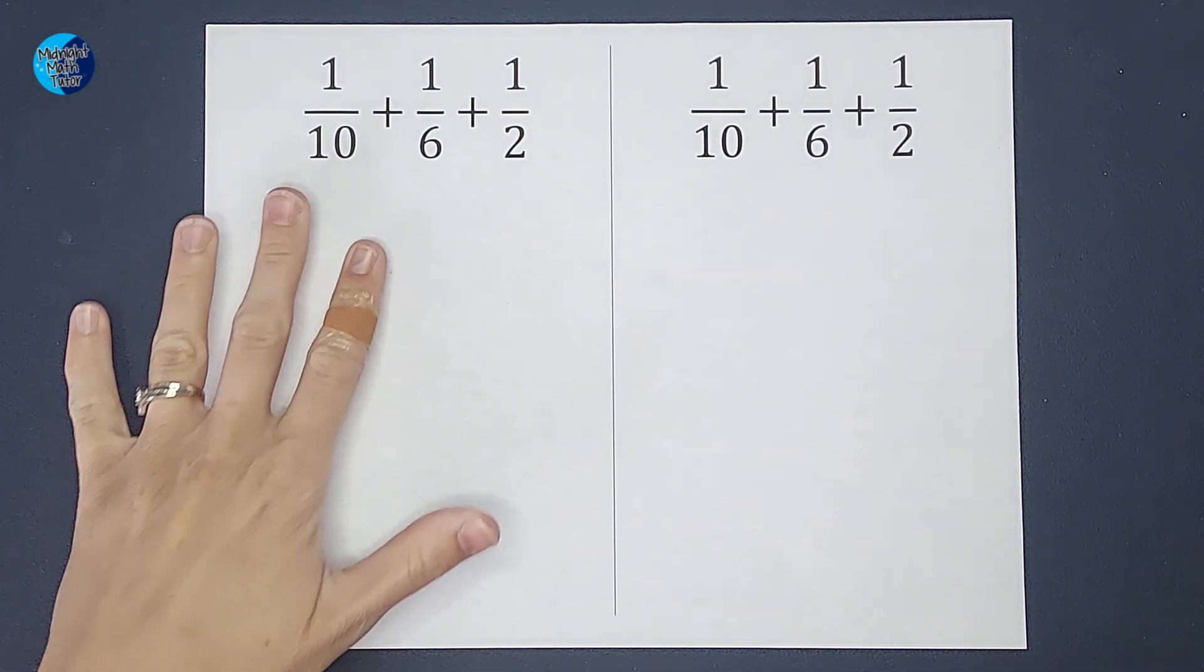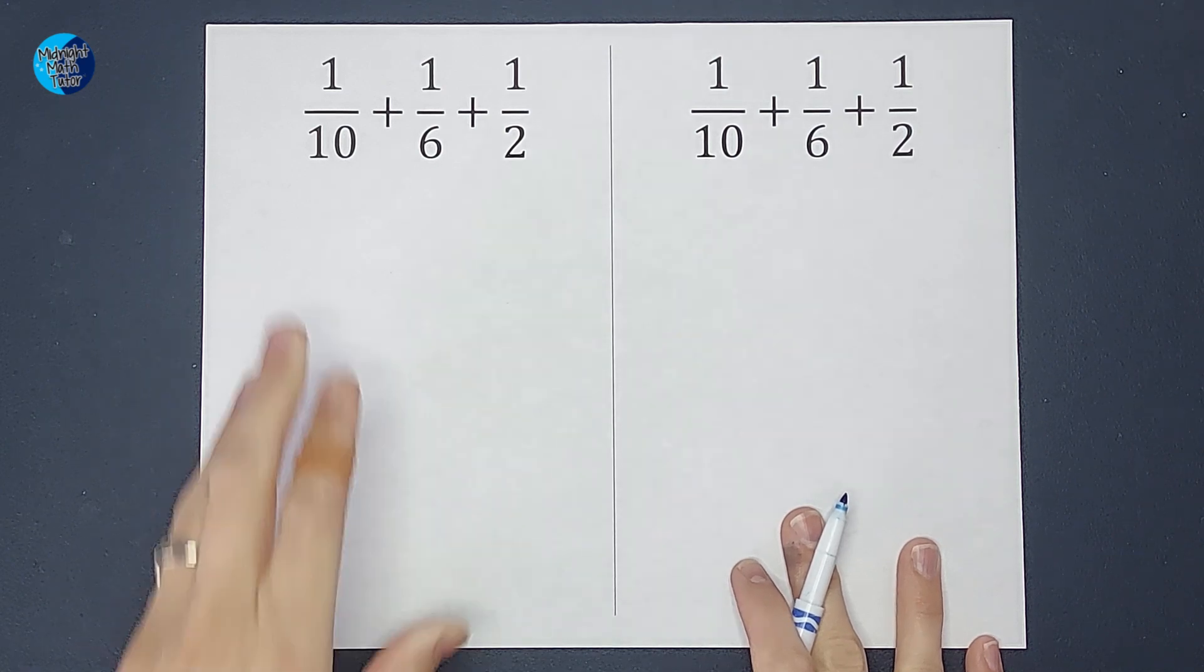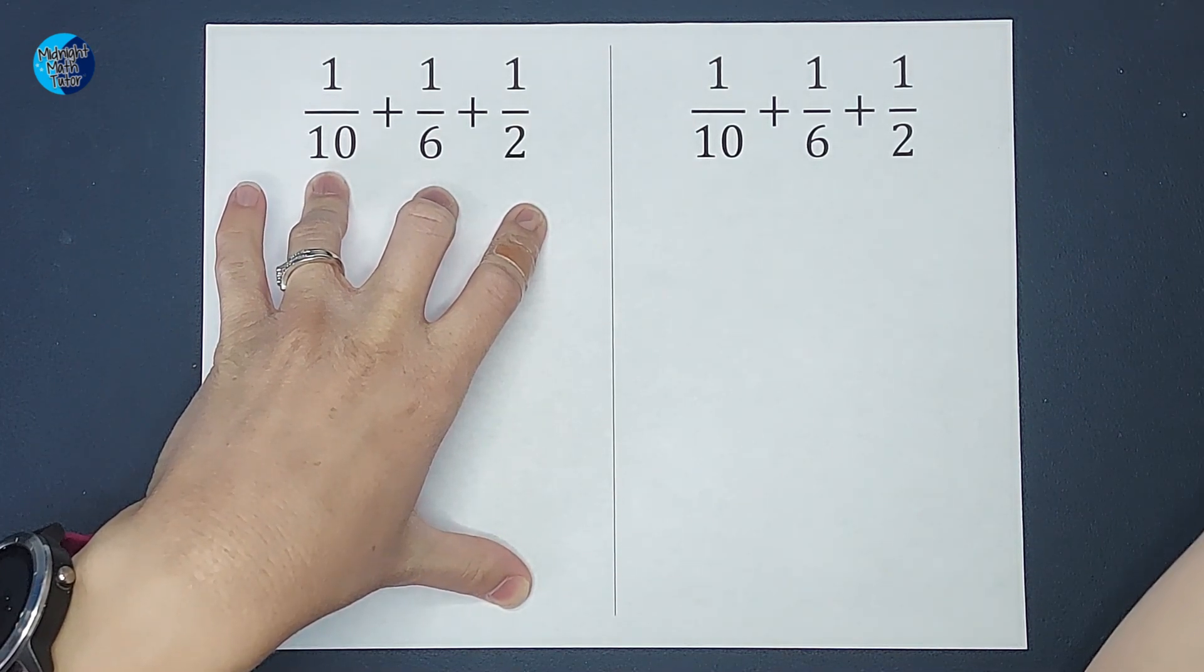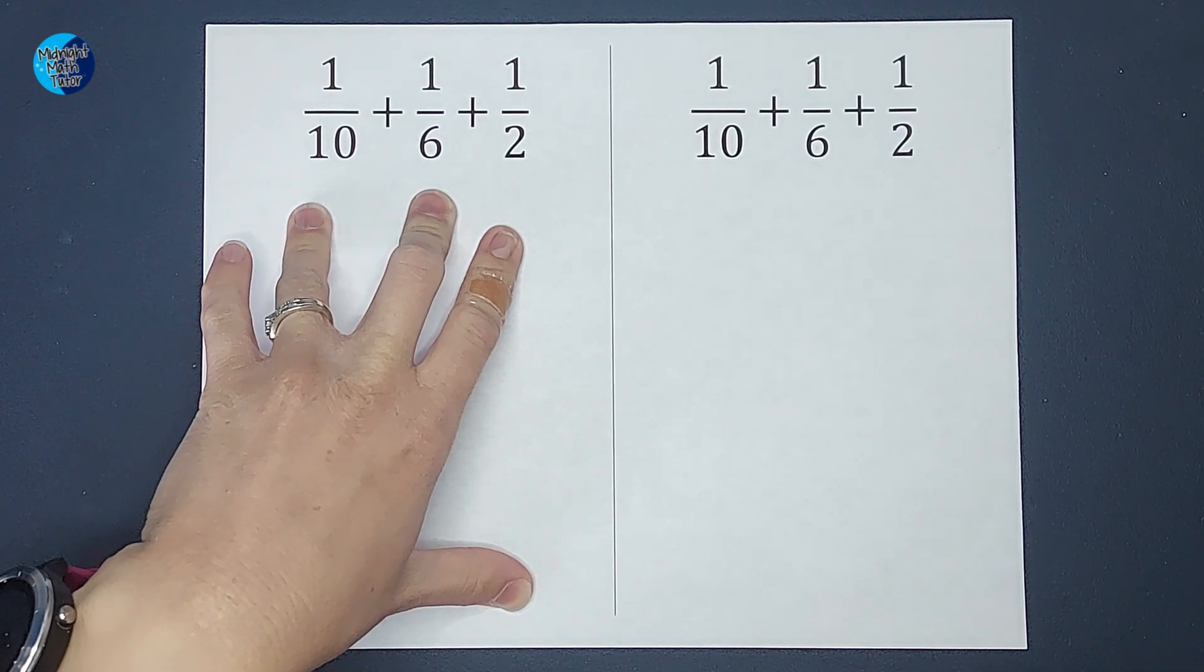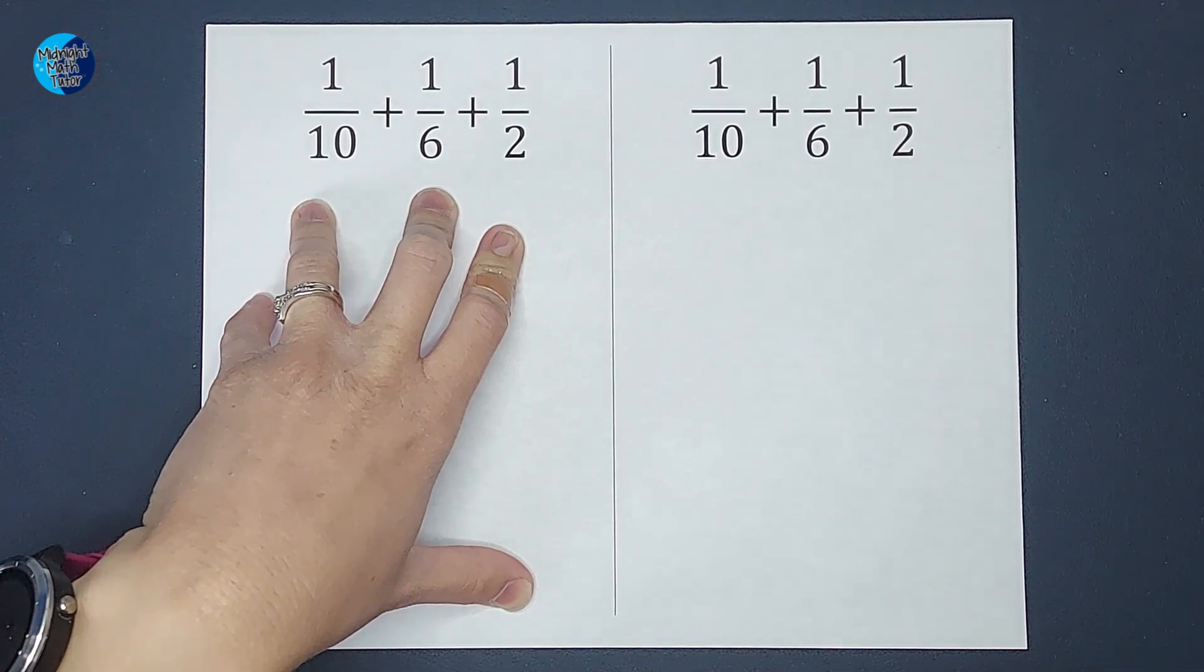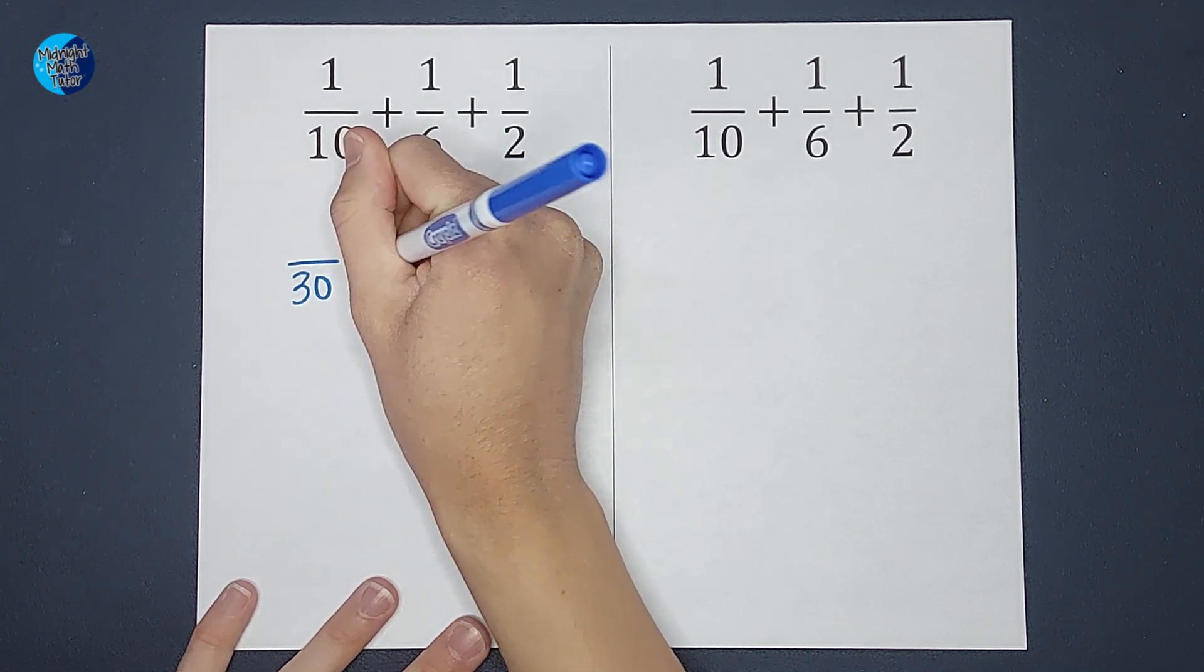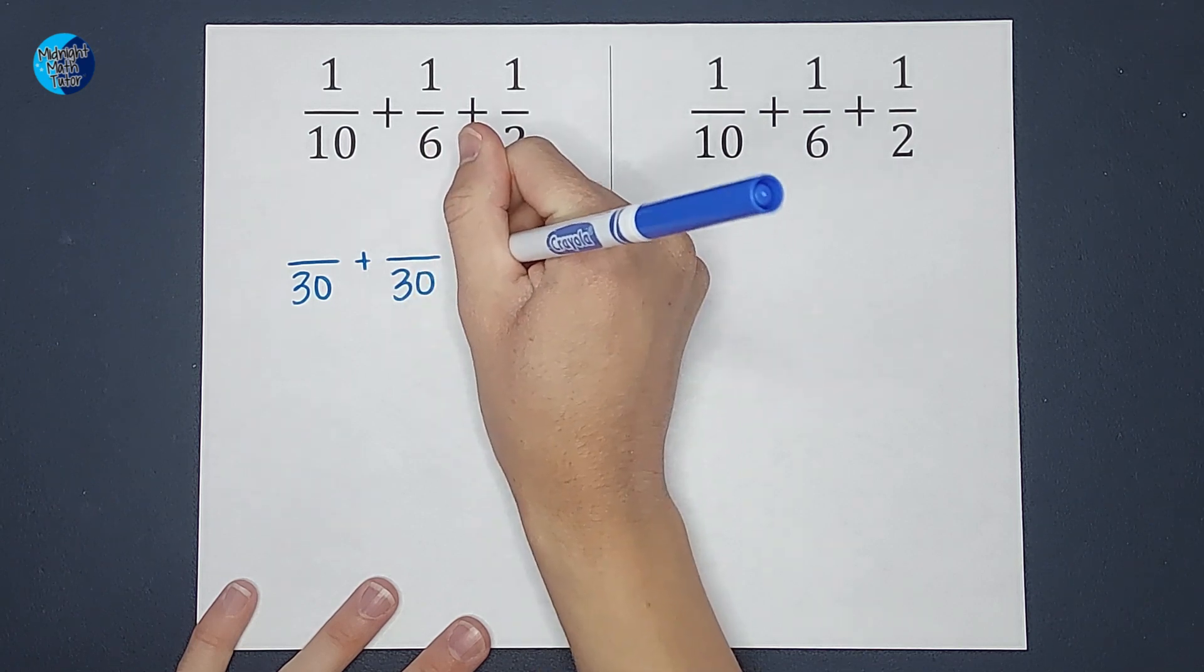For this one, my strategy is going to be to get all the denominators the same up front. So when I look at ten, six, and two, I want to think of the lowest number that they all go into. So when I think about it for a minute, I figure out the lowest number they all go into is 30. So I want to make three new fractions that we are adding together that all have a denominator of 30.